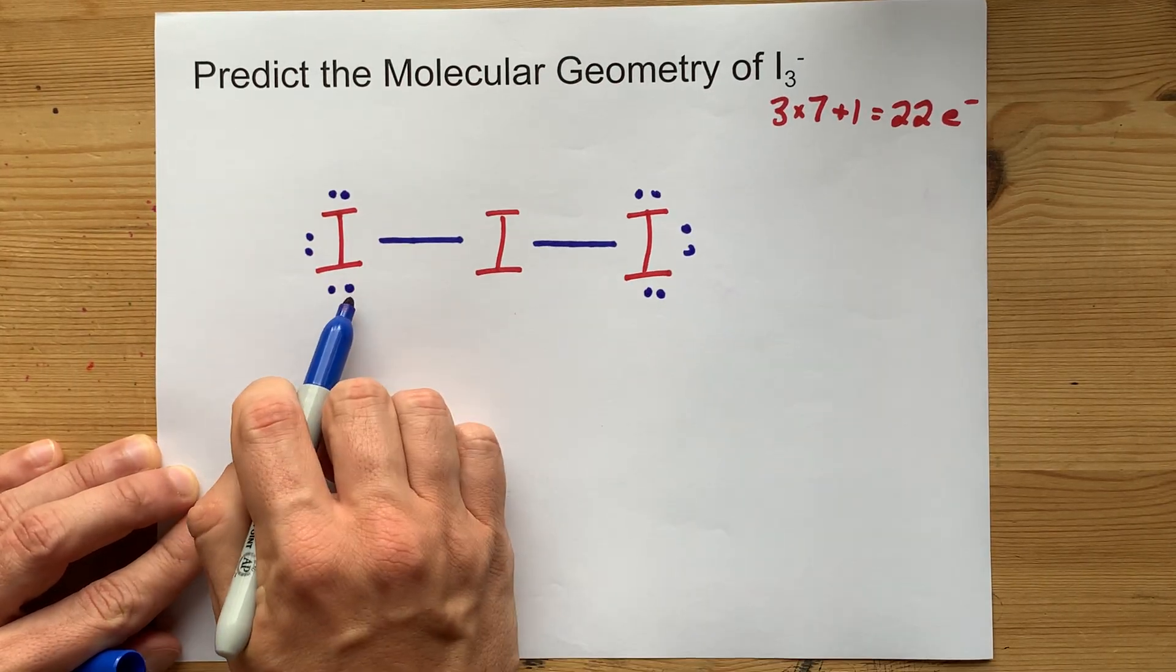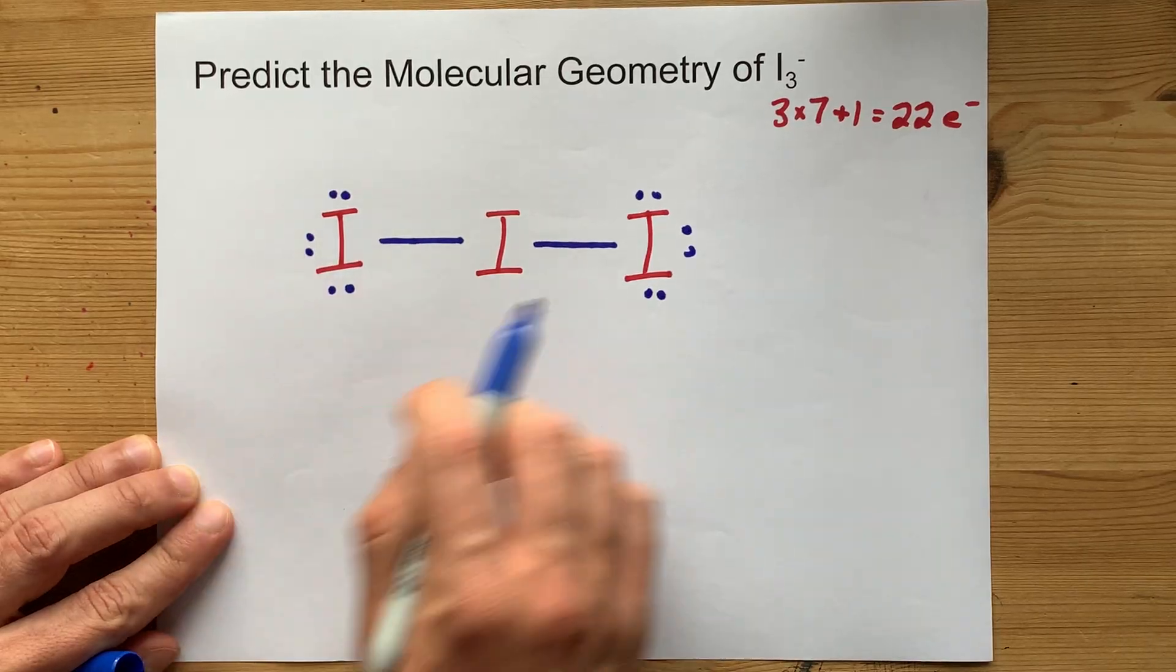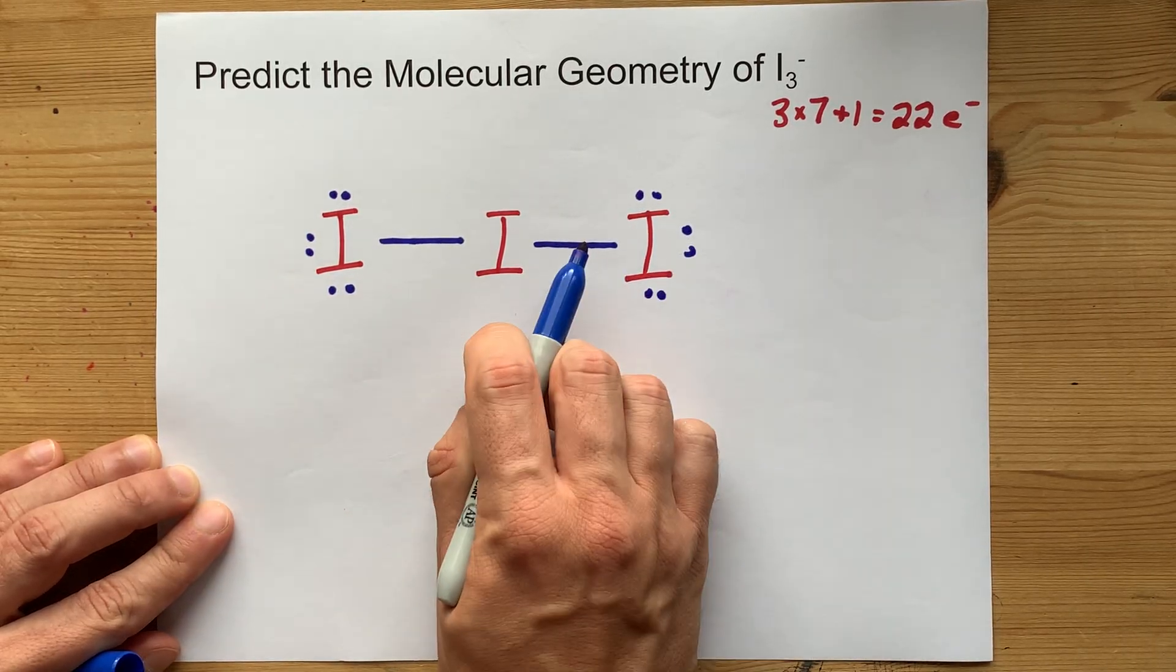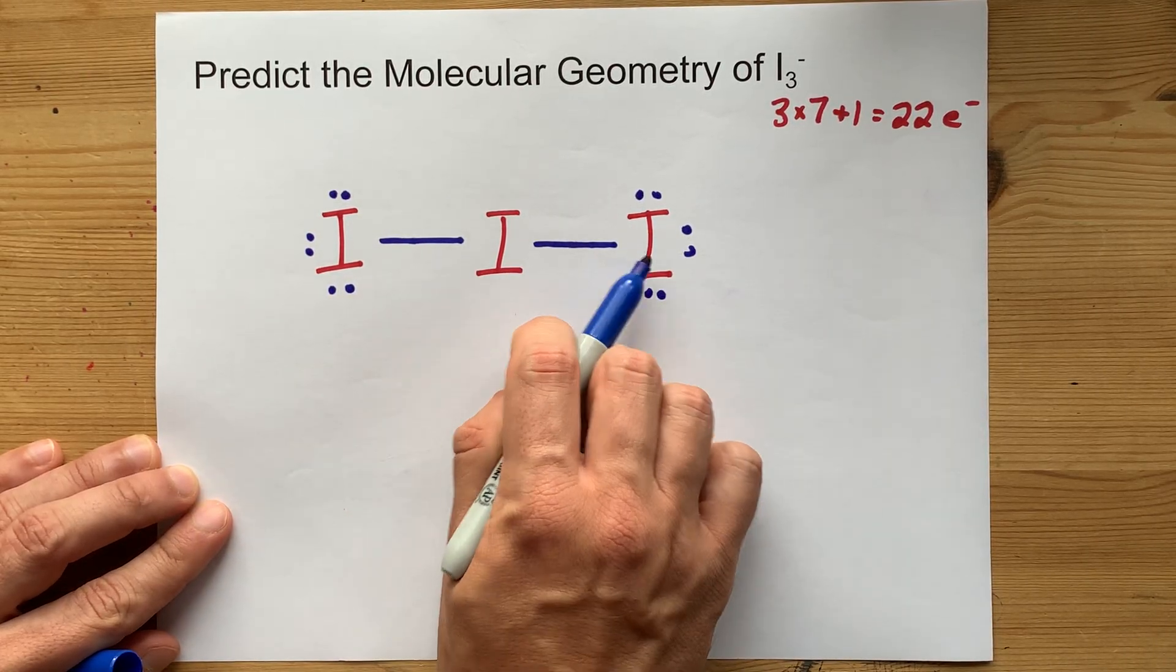By the way, 1, 2, 3, 4, 5, 6, 7, 8 for this I, 1, 2, 3, 4, 5, 6, 7, 8 for that I.